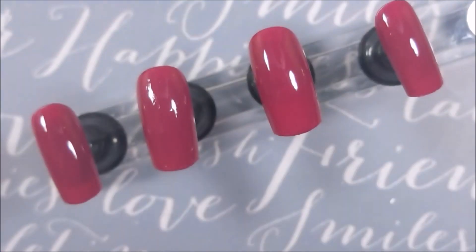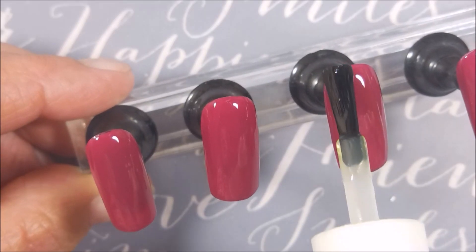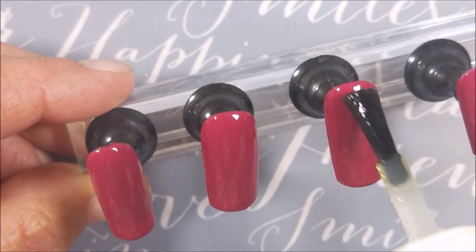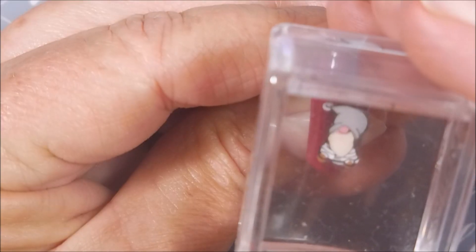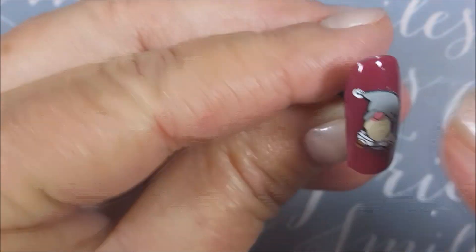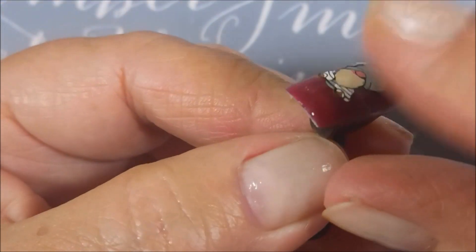Alright, so I'm going to use Vibrant Vinyls Get a Grip. It's a sticky base coat. And you just apply a thin layer. You don't have to go on thick with this. And just let it sit for like a minute, 30 seconds a minute. So let it dry. And then your decal sticks where you want it to. And it lays pretty flat.